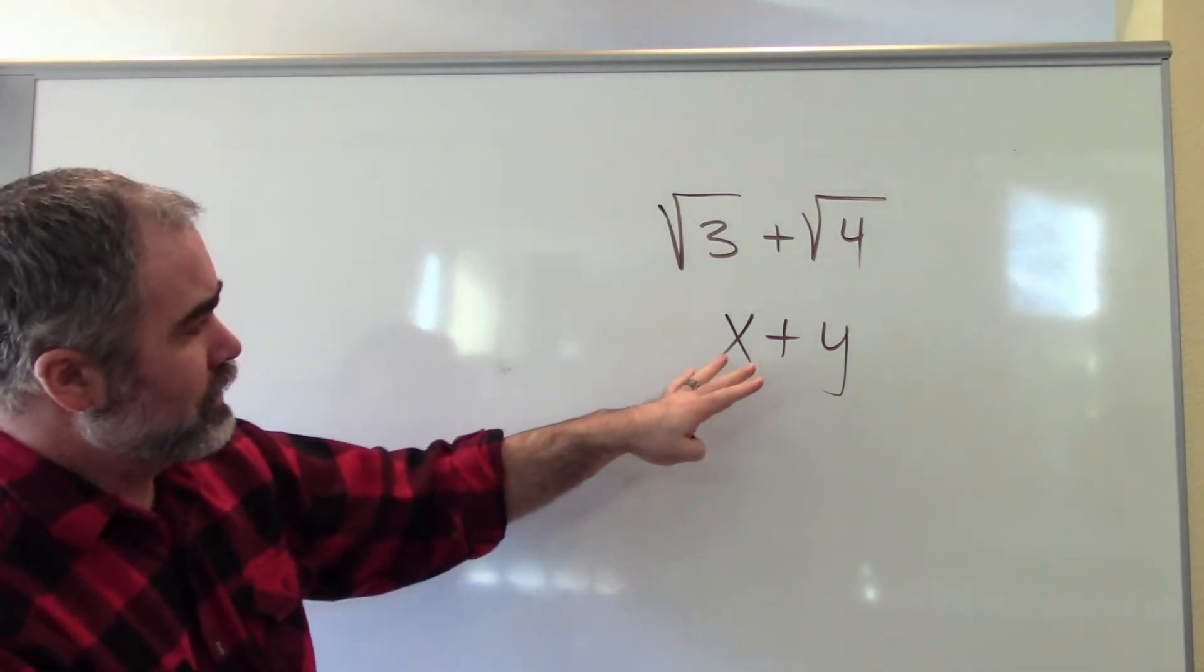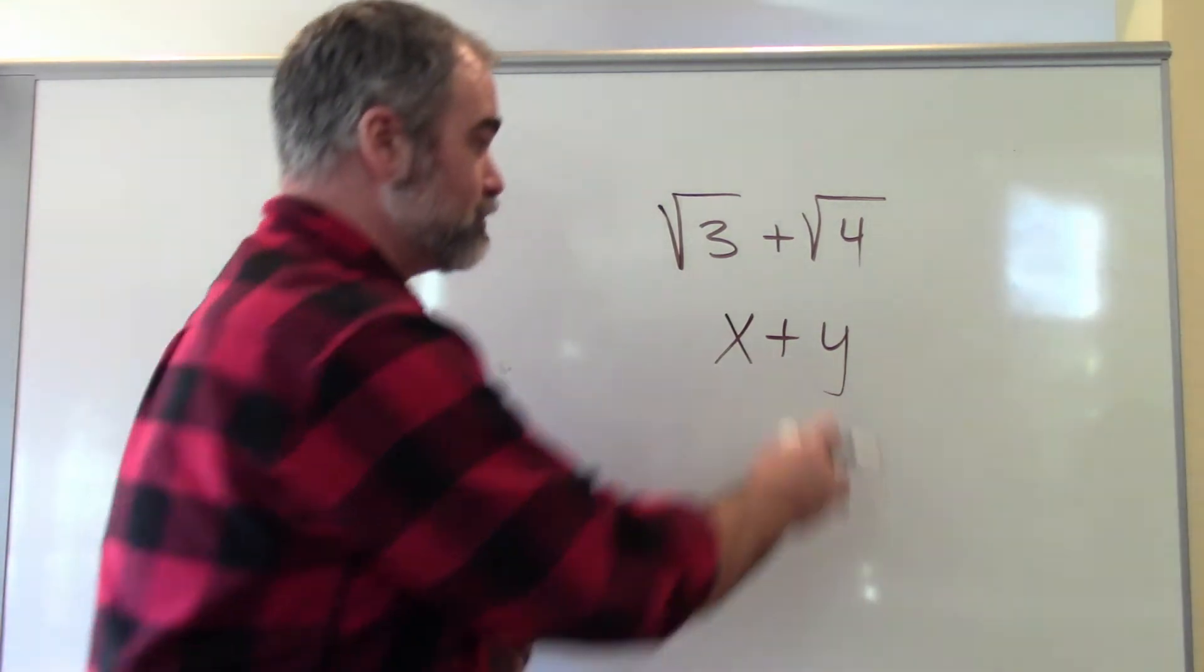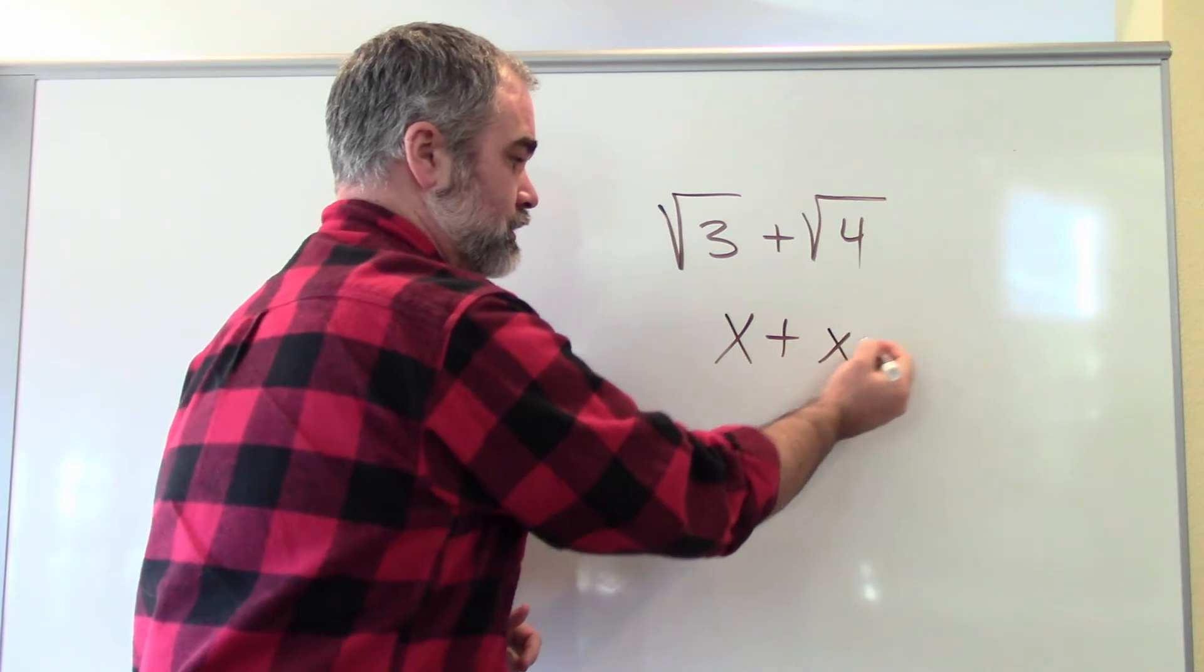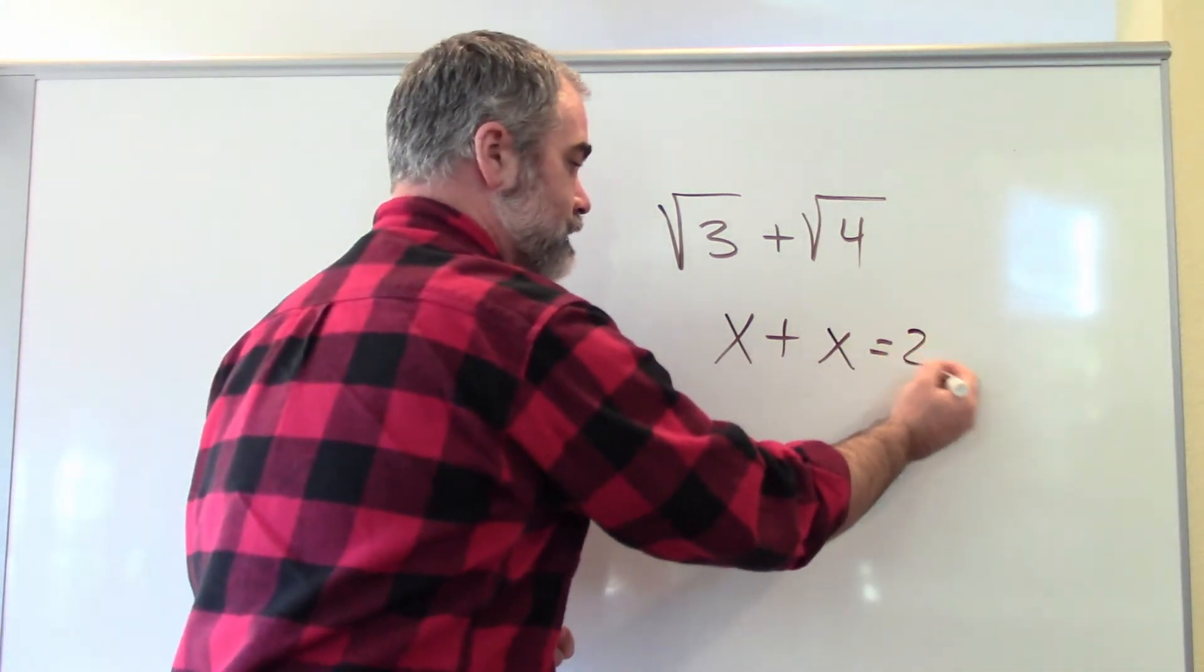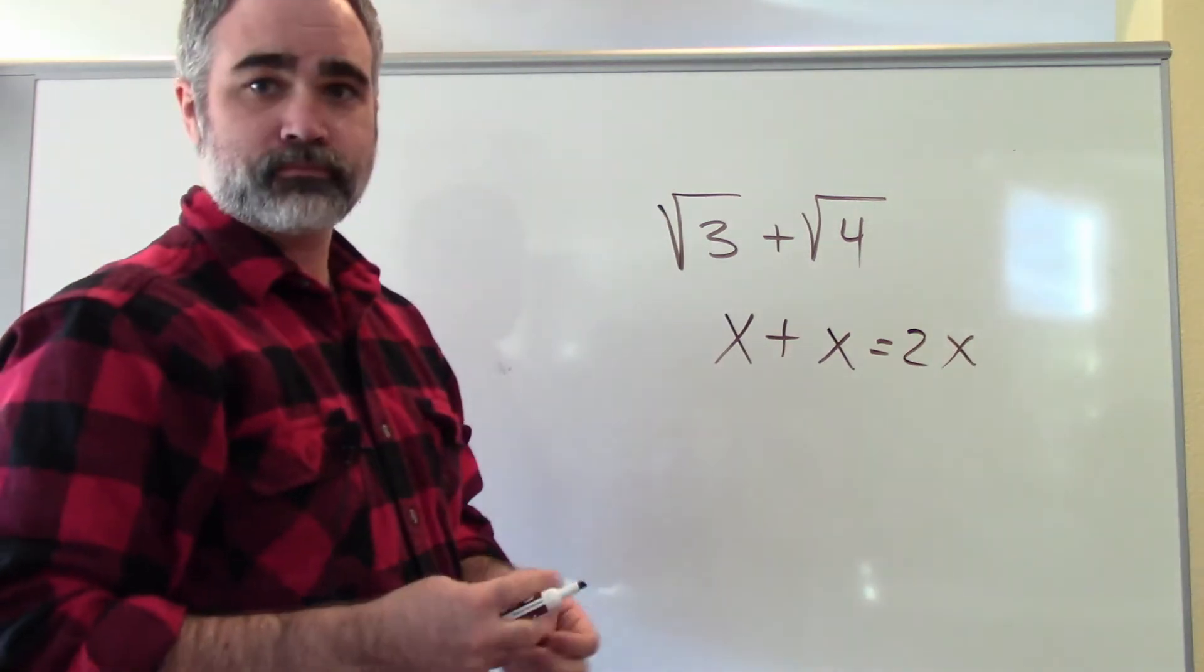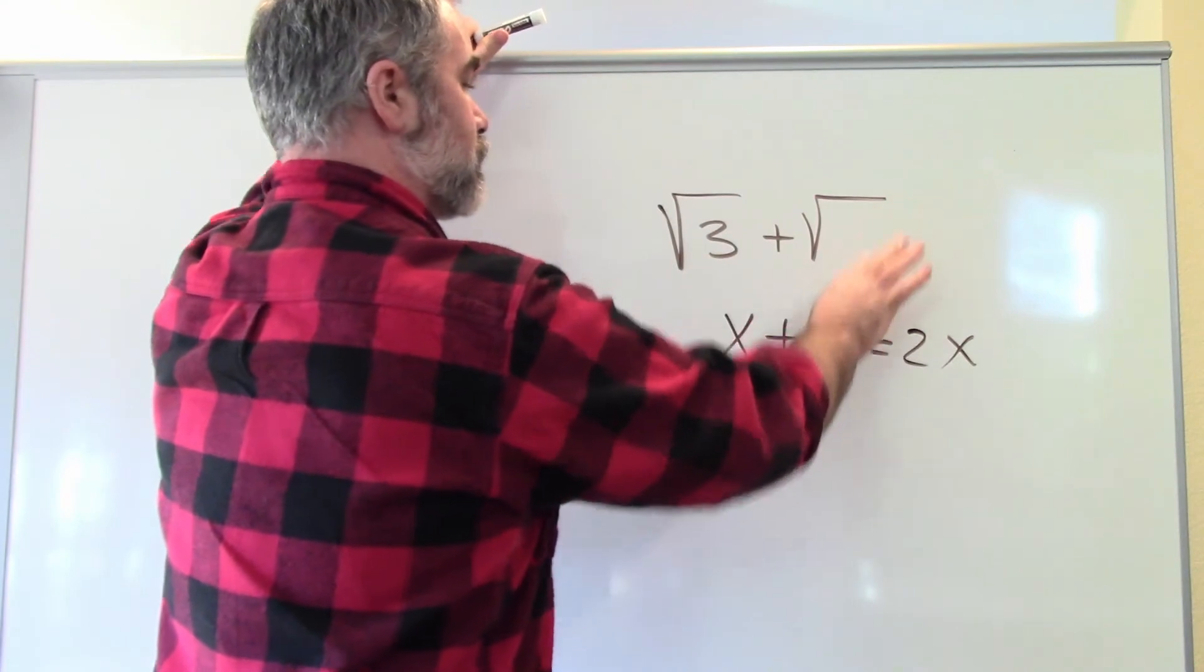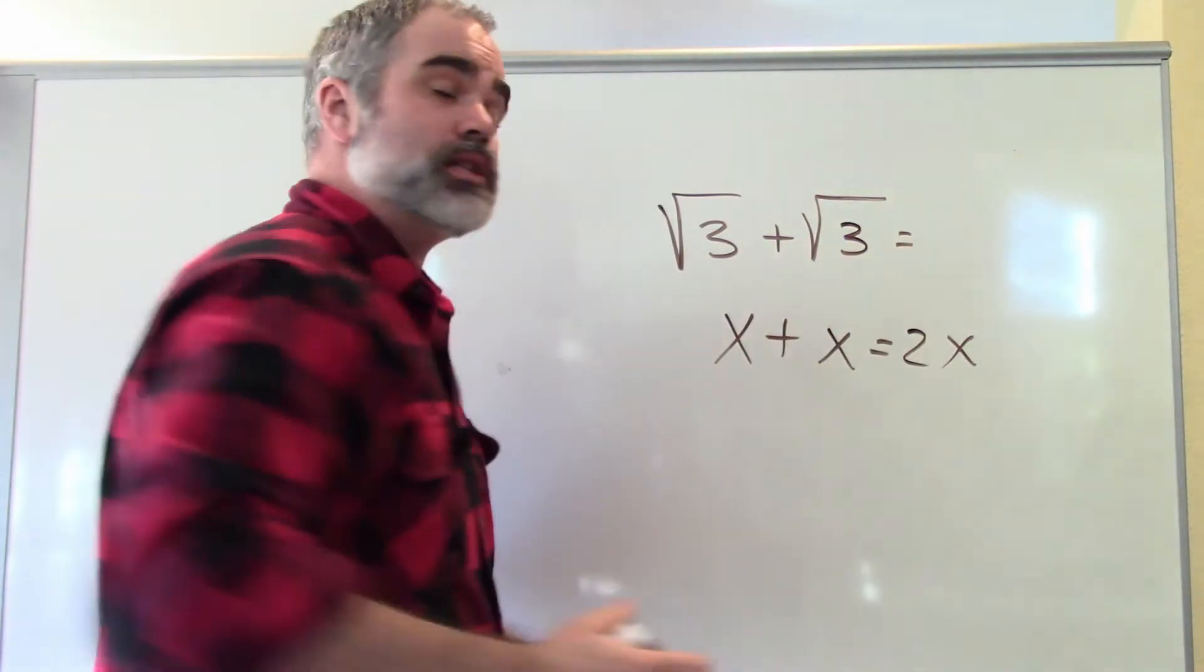Now, keep in mind, if I did have another x here, x plus x is something that I can combine. And hopefully you all out there know that this is 2x. So that means if I had a 3 and another 3, I should be able to combine that as well. And you can.